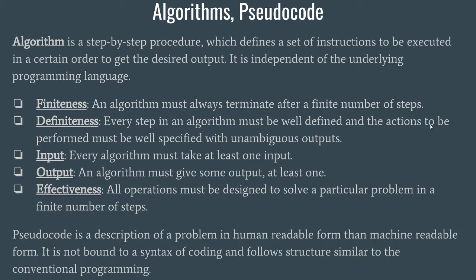The second property is definiteness: every step in an algorithm must be well defined, and the actions to be performed must be well specified with unambiguous outputs. For example, if you have an expression containing 5 divided by 0, that will produce an erroneous output because 5 divided by 0 is an undefined quantity — that is an ambiguity. Whatever you write must be clear and concise; it must not produce any ambiguous outputs.